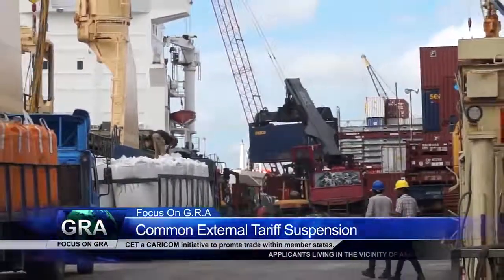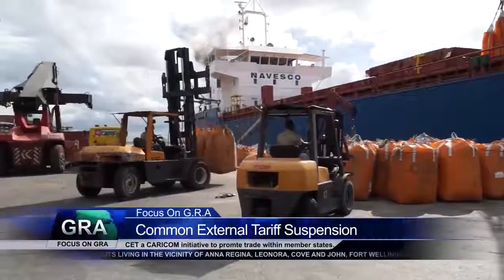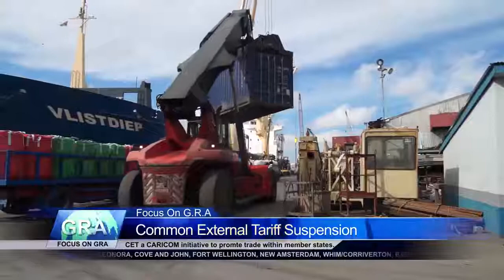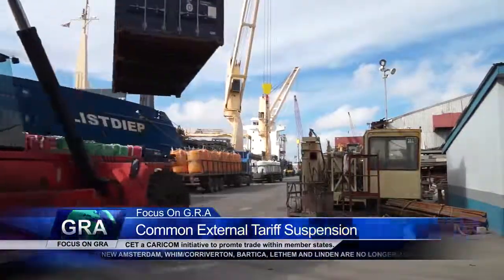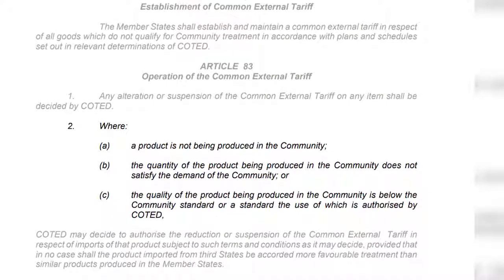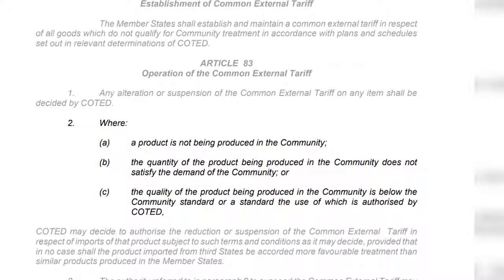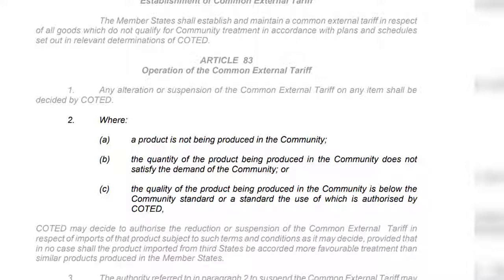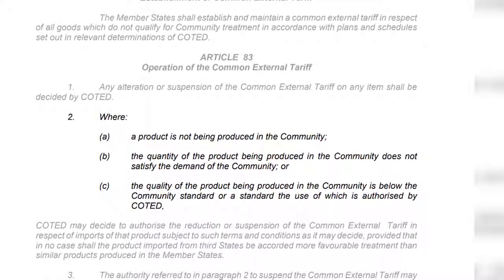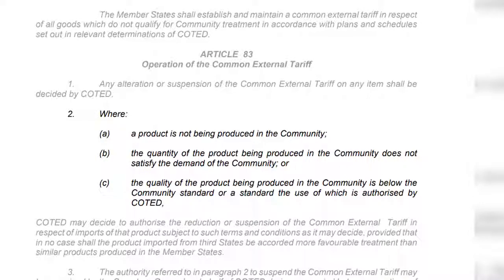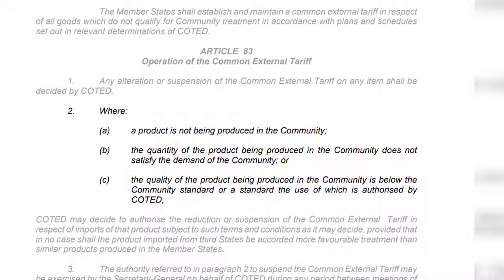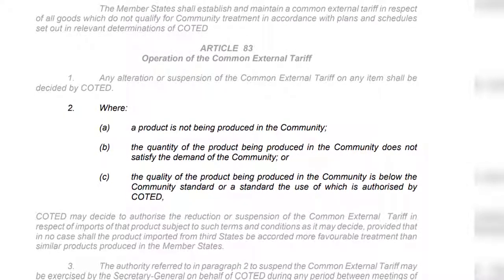While the objective of the CET is to protect regional suppliers, there are instances where the regime is relaxed. One such instance is the unavailability of the region to supply the product demanded. Paragraph 2 of Article 83 of the Revised Treaty of Chaguaramas states that where a product is not being produced in the community, or where the quantity of the product being produced in the community does not satisfy the demand of the community, or where the quality of the product being produced in the community is below community standards, when we say suspended, what we're saying is that we would like to be able to buy this product from external sources without having to pay the requisite duty that has been established in the CET schedule.